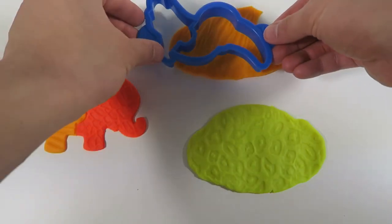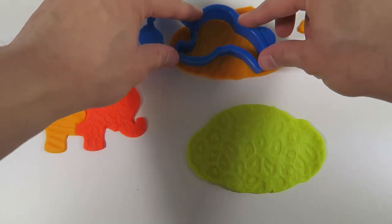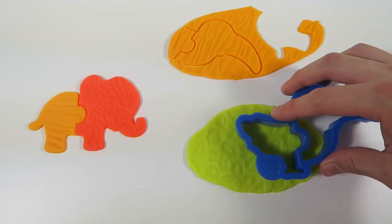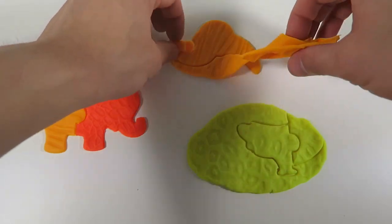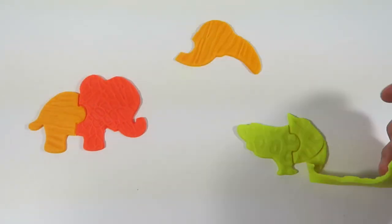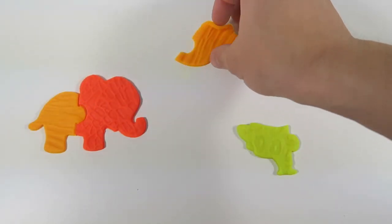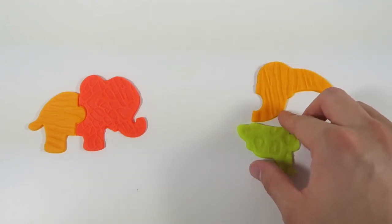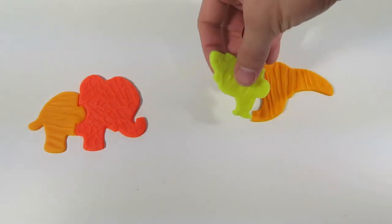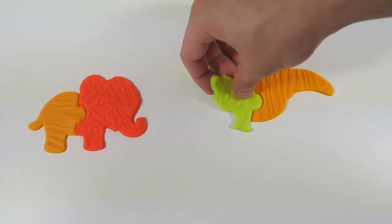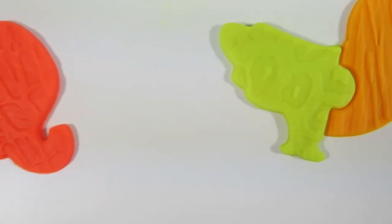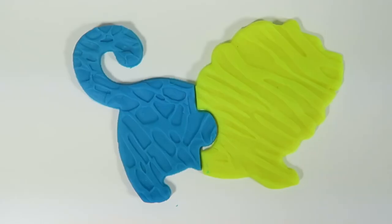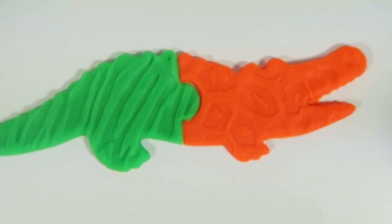Now I'm going to do the toucan. It reminds me of Fruit Loops cereal. I also made a lion and a crocodile.